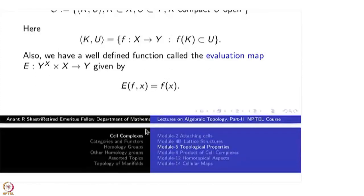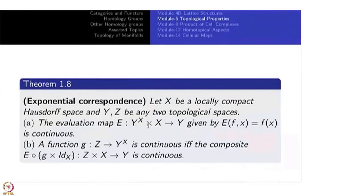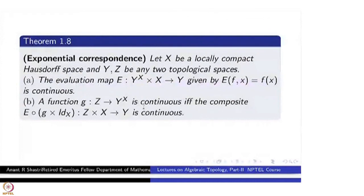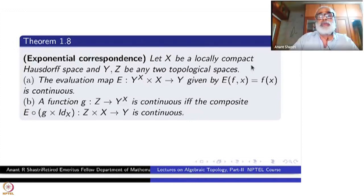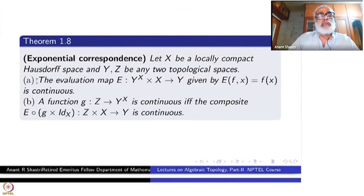What is important is that as a joint function, this capital E from Y power X cross X to Y is a continuous function — that is what we want to have. That is the first part of the theorem. This E is precisely called the evaluation map. The hypothesis on X is that X is locally compact Hausdorff; Y and Z could be any topological spaces. The first part is that E is continuous.